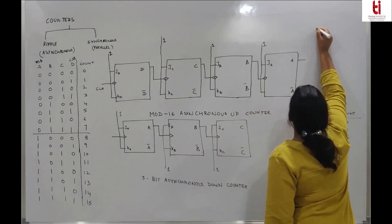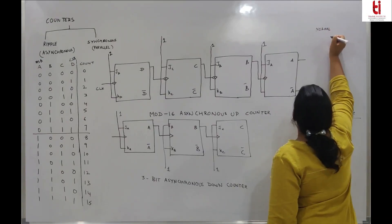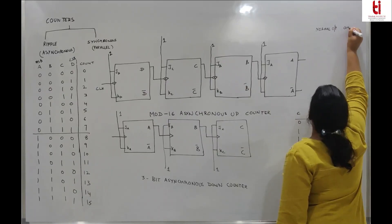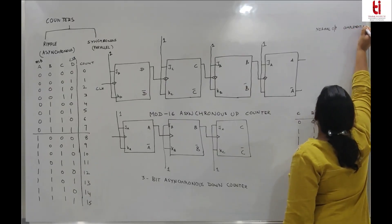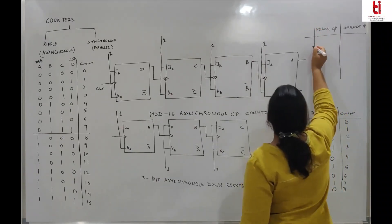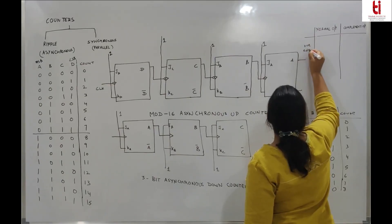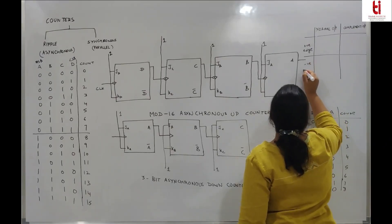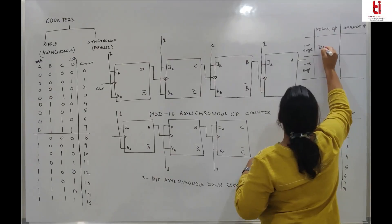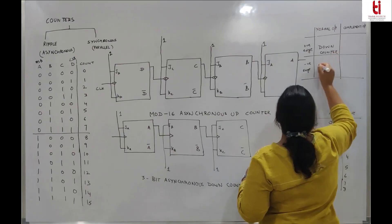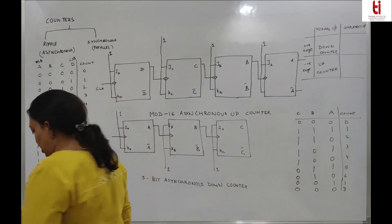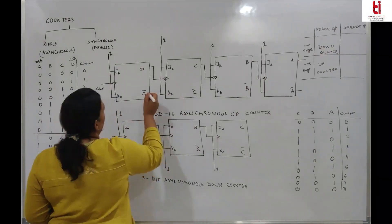I will make a table here with normal output and complement output against positive edge and negative edge clock options. When it is normal output on positive edge of the clock, it acts as a down-counter. When it is negative edge, it also acts as a down-counter.